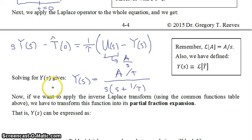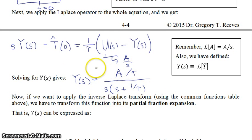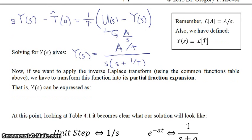What we want in the end is T-hat as a function of time, not its Laplace transform. So we need to take this function and do an inverse Laplace transform to get back into the time domain. In this class, we won't apply the line integral formula; instead, we put the function into a form that can be inverted using the inverse Laplace transform table.